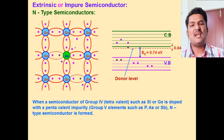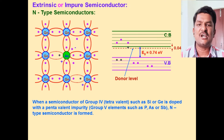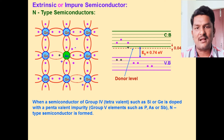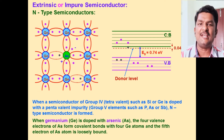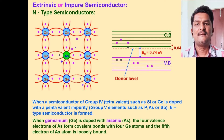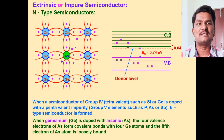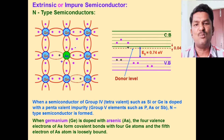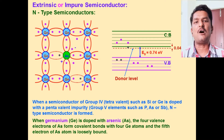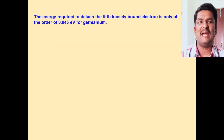In an N-type semiconductor, the majority charge carriers are electrons and the minority charge carriers are holes. The number of electrons present in the conduction band is more than the number of holes present in the valence band.